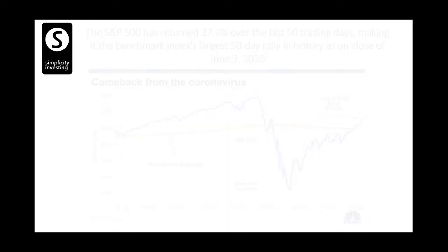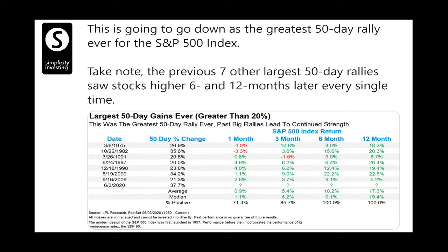Here is data showing cases where, in a 50-day period, the stock market went up more than 20%. Since 1975, these are the dates: 1975, 1977, 1982, 1991, 1997, 1998, then in 2009 it happened twice — up 34% and 21%. This time it has gone up 40% in about three months, the highest ever. When markets went up 40% in a span of three months, many people think it's time to exit the market.